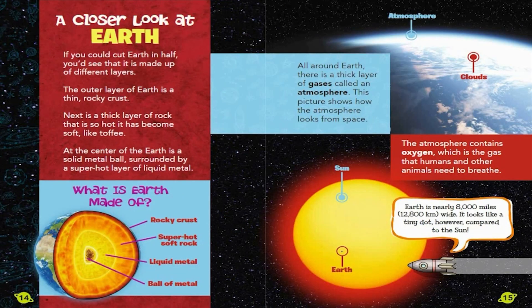A closer look at Earth. If you could cut Earth in half, you'd see that it is made up of different layers. The outer layer of Earth is a thin, rocky crust. Next is a thick layer of rock that is so hot it has become soft, like toffee. At the center of the Earth is a solid metal ball, surrounded by a super-hot layer of liquid metal. What is Earth made of? Rocky crust, super-hot soft rock, liquid metal, ball of metal.